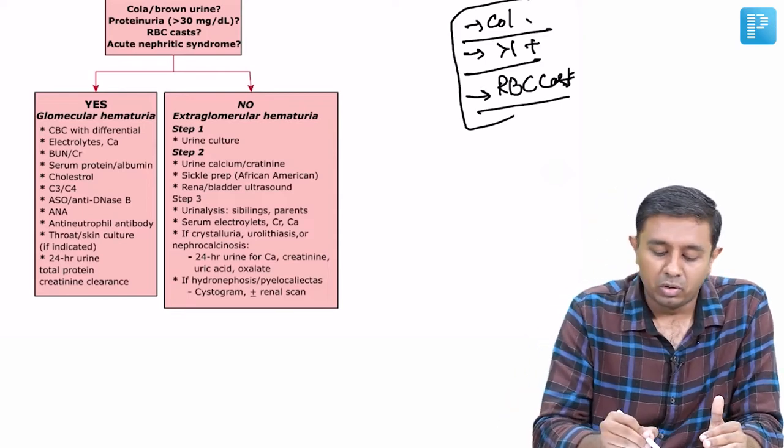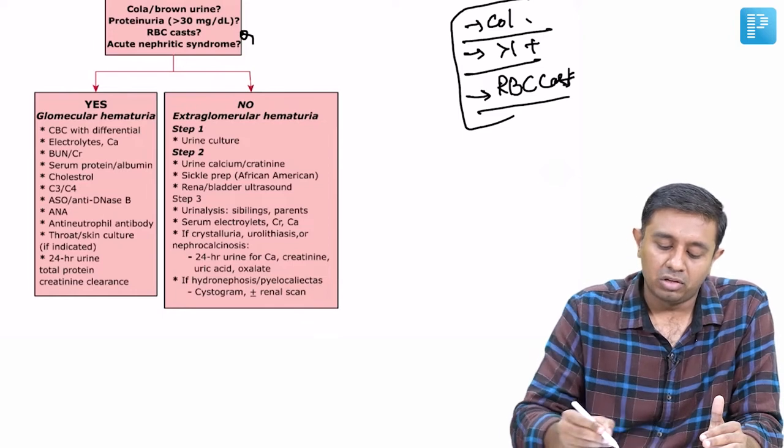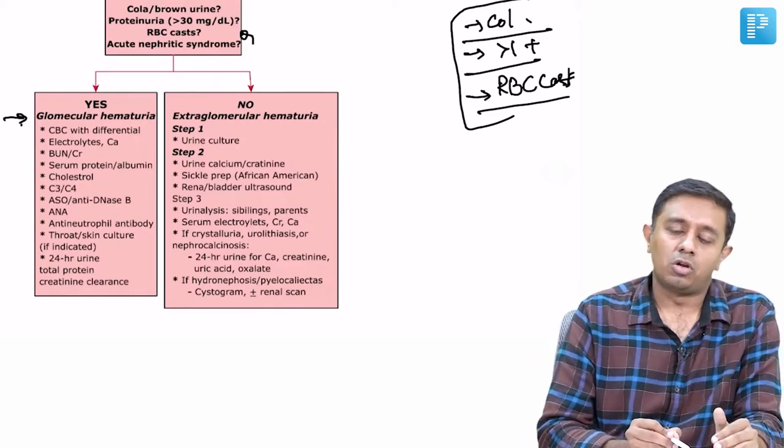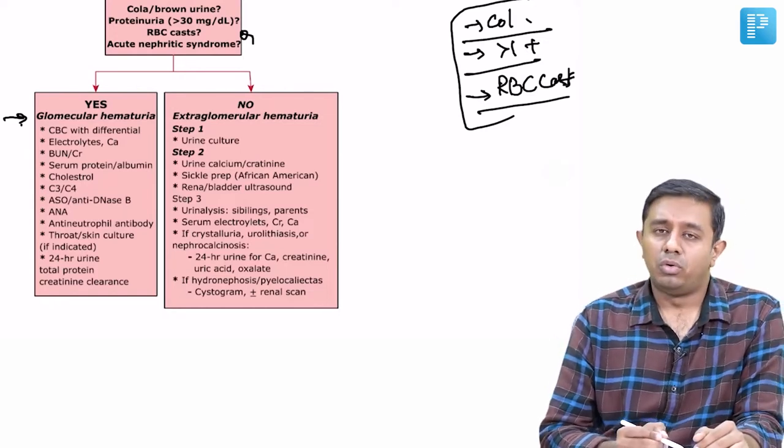The clinical picture which are suggestive of acute nephrotic syndrome - if any of those things are present, what we are looking at here is glomerular component as the glomerular cause of hematuria. So what are the evaluations that we would do as part of glomerular disease?